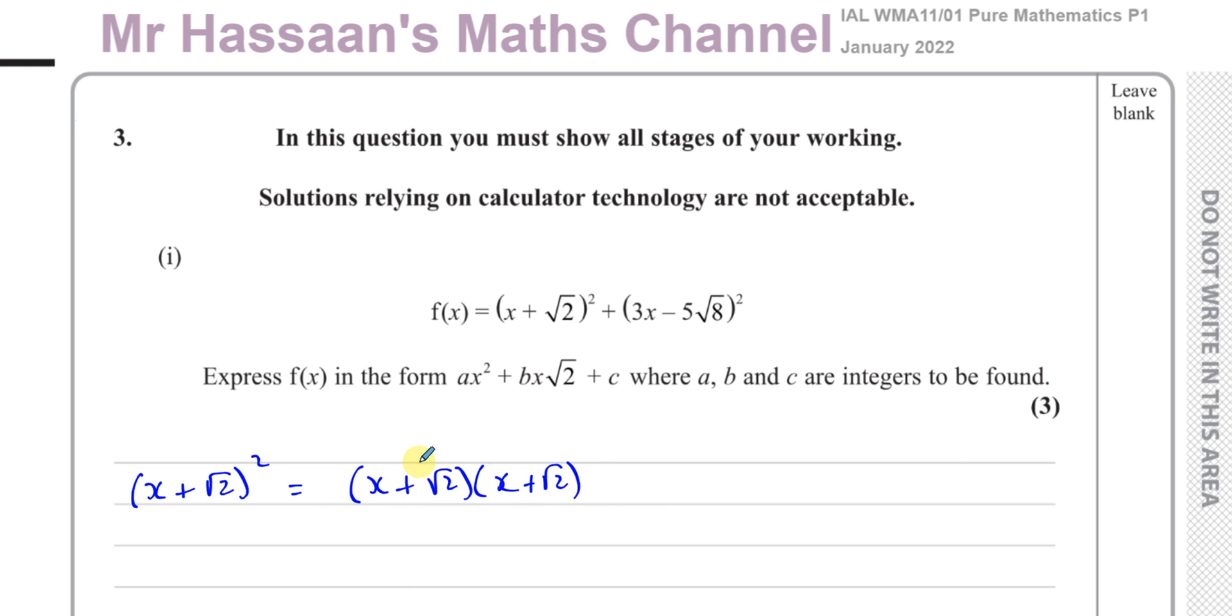You have x times x, x times √2, and then √2 times x, and then √2 times itself. I prefer personally to expand using the pattern of square brackets, where you square the first term. So you're going to get x². And then if there's a plus, I put a plus, and then I multiply these together and double that. So it would be 2 times x times √2, and then you square the last term, which is √2 squared, which is going to give me 2. So I've squared that bracket.